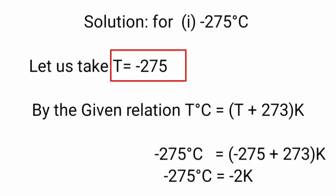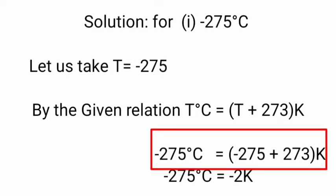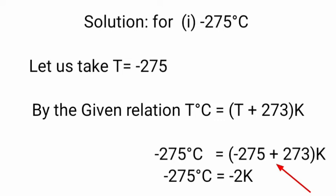Taking T as minus 275 degrees Celsius, we get the relation as: minus 275 degrees Celsius is equal to minus 275 plus 273 Kelvin. That is a simple subtraction — we subtract 275 from 273 Kelvin, giving us minus 2 Kelvin, which is the required answer. By using this method we can easily convert temperature from Celsius to Kelvin.